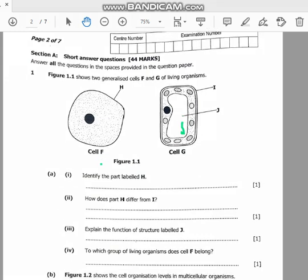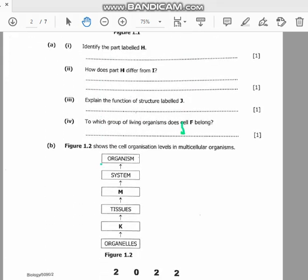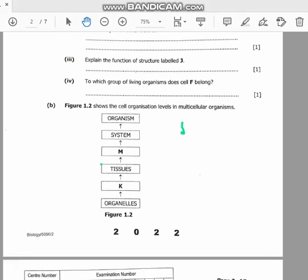Then we go to part B. This states that Figure 1.2 shows the cell organization levels in multicellular organisms. So we have organelles, K, tissues, M, system, and organism.